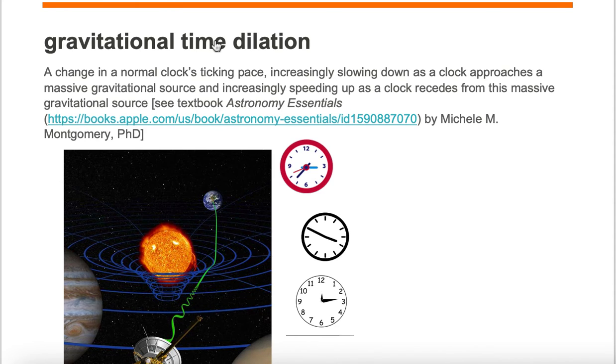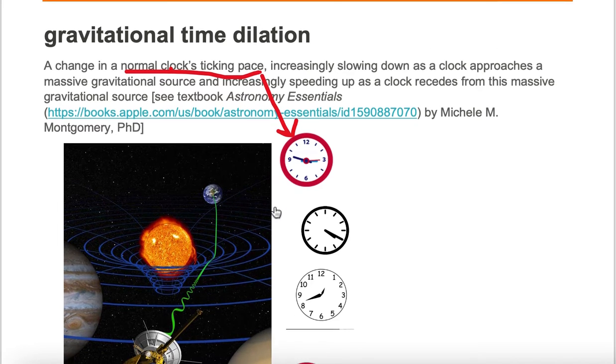In this gravitational time dilation, we have normal clocks ticking pace, which is going to be denoted by the red clocks.